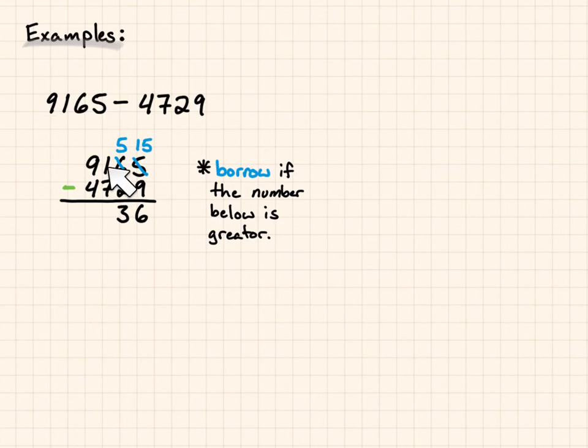7 is greater than 1. So I'm going to have to borrow from the next place value over. The 9 becomes an 8. And the 1 becomes an 11. 11 minus 7 gives me 4. And 8 minus 4 gives me 4. So my answer becomes 4,436.